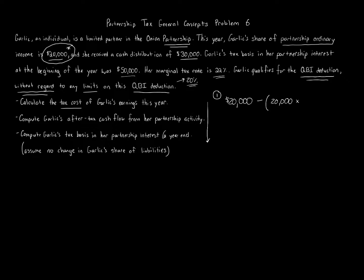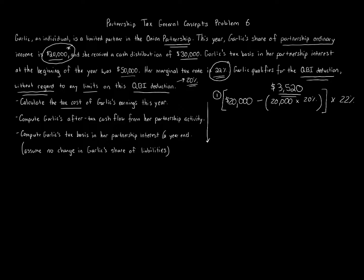The QBI deduction — unless you're subject to limitation — is at most twenty percent times the qualified business income. So we take twenty thousand dollars times twenty percent, which equals four thousand dollars. That leaves sixteen thousand dollars, and we multiply by the marginal tax rate of twenty-two percent. That equals three thousand five hundred twenty dollars. That is the answer to question one — the tax cost of Garlic's earnings this year is $3,520.